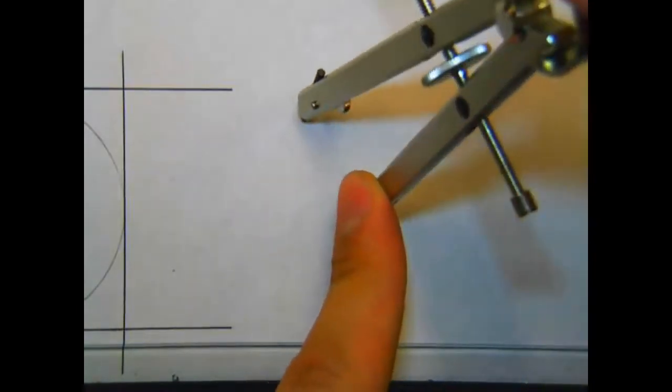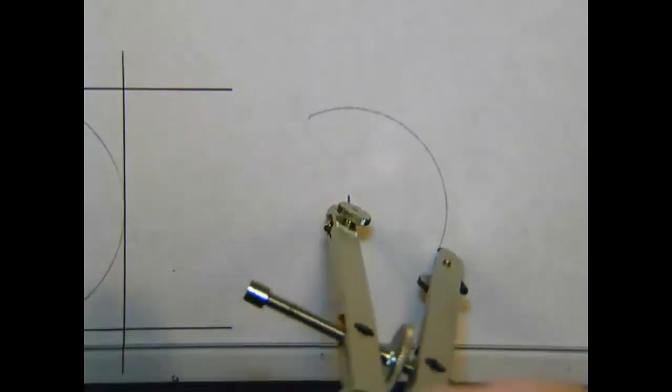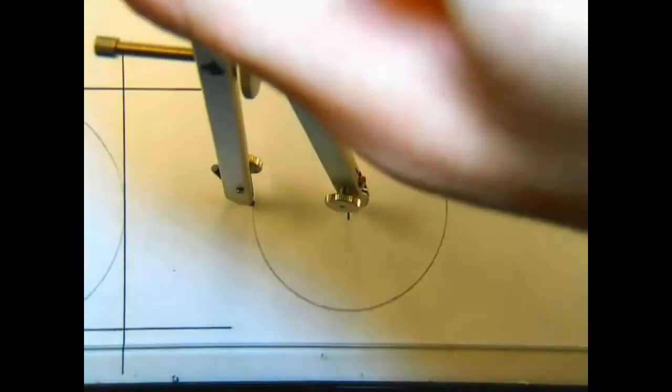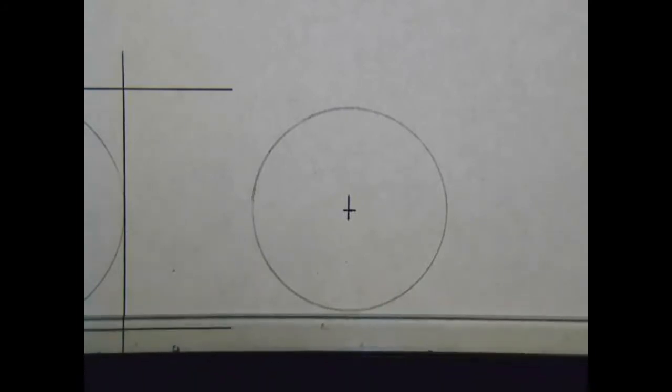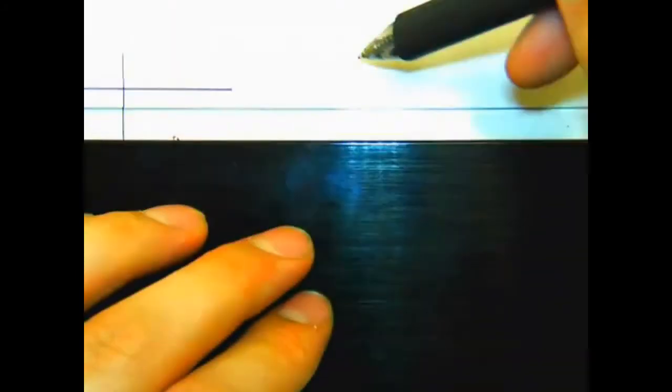We'll set our compass on our desired center point, draw the circle, and again we will draw, using our straight edge, horizontal lines at the bottom and top of the circle, but we're not going to draw the vertical lines.